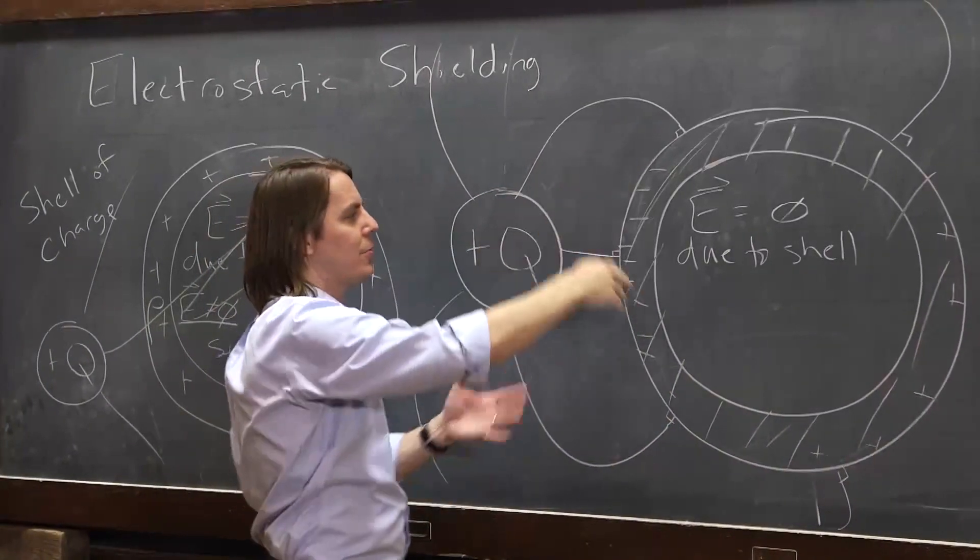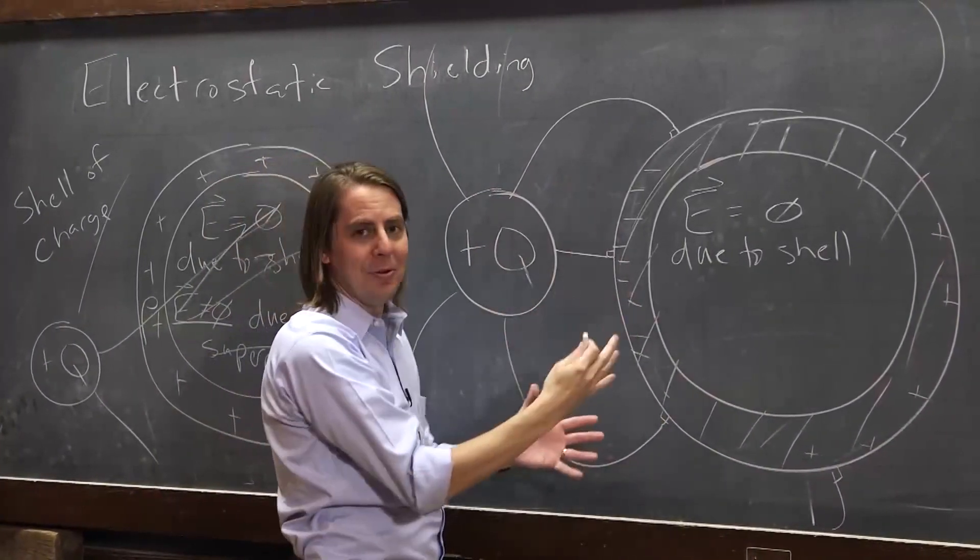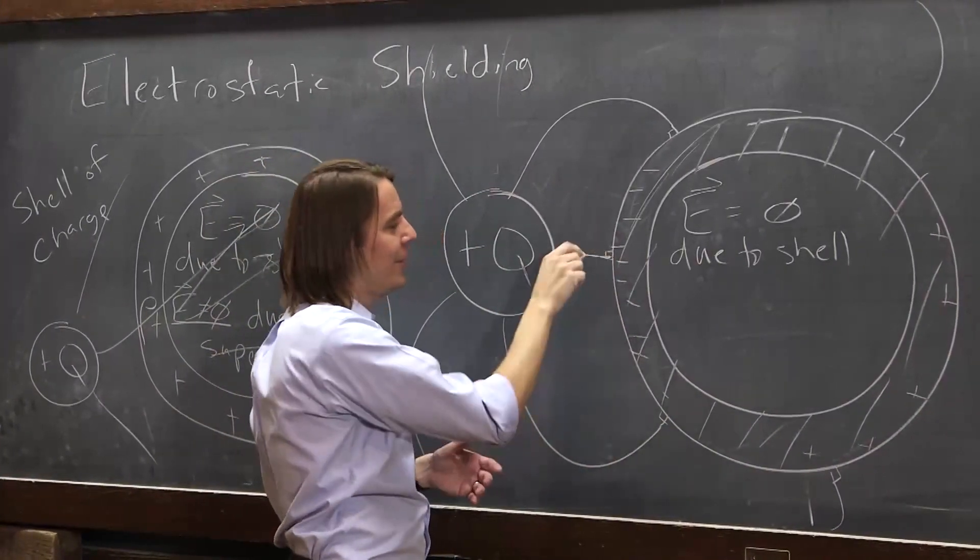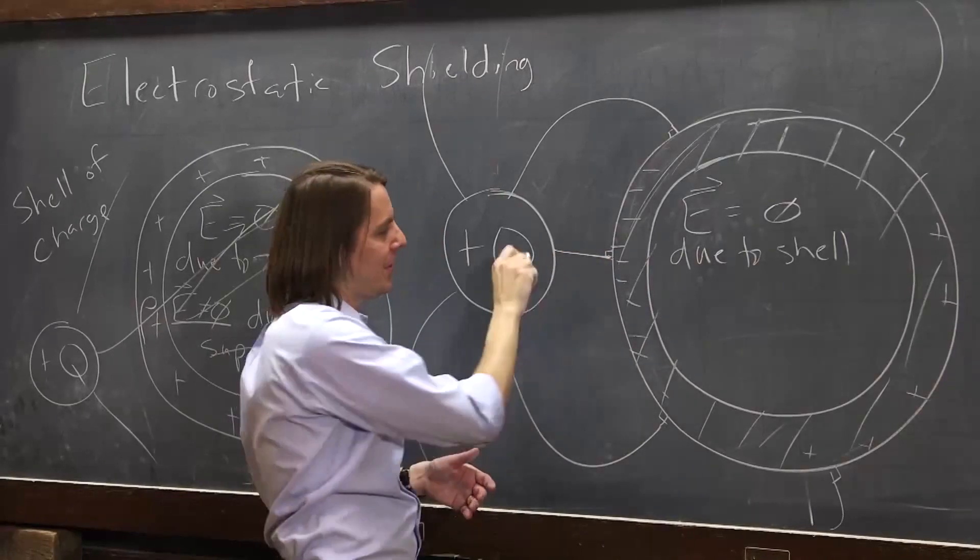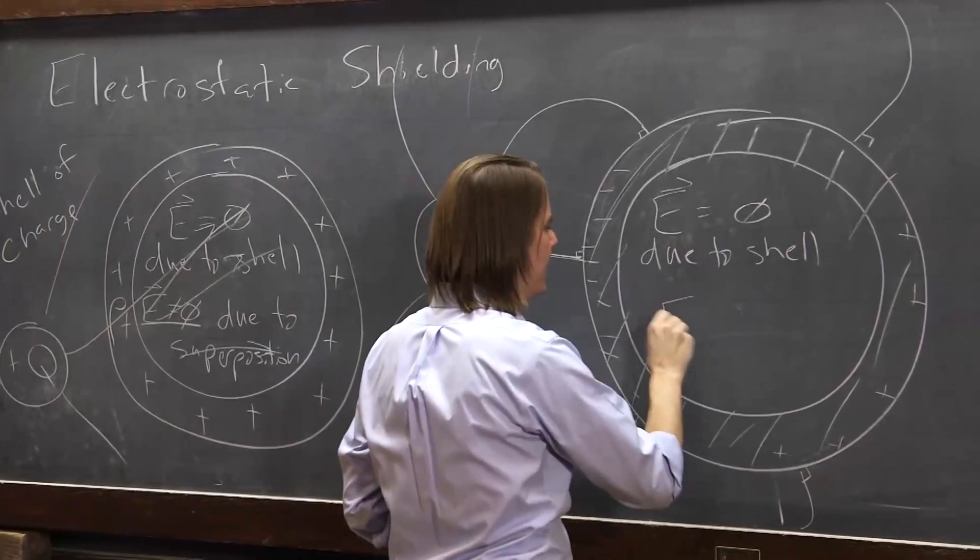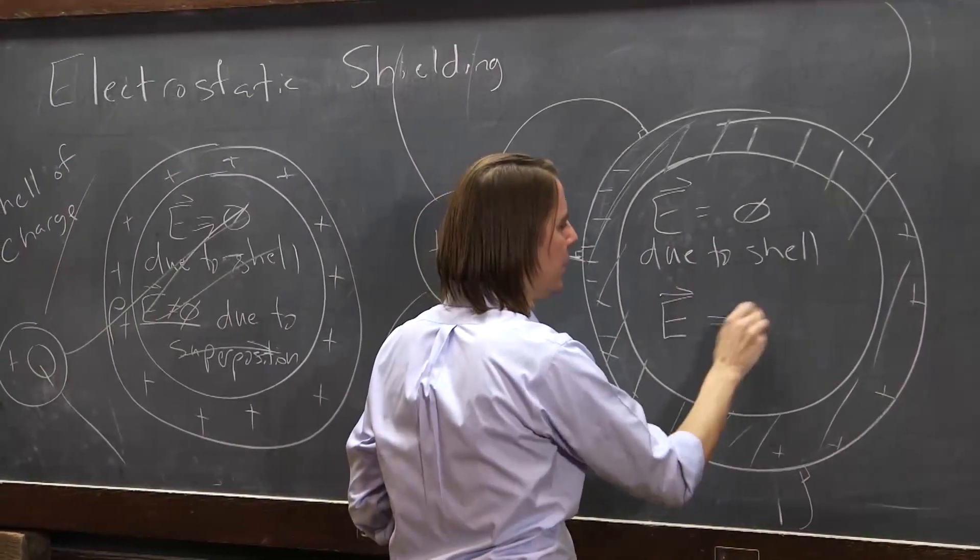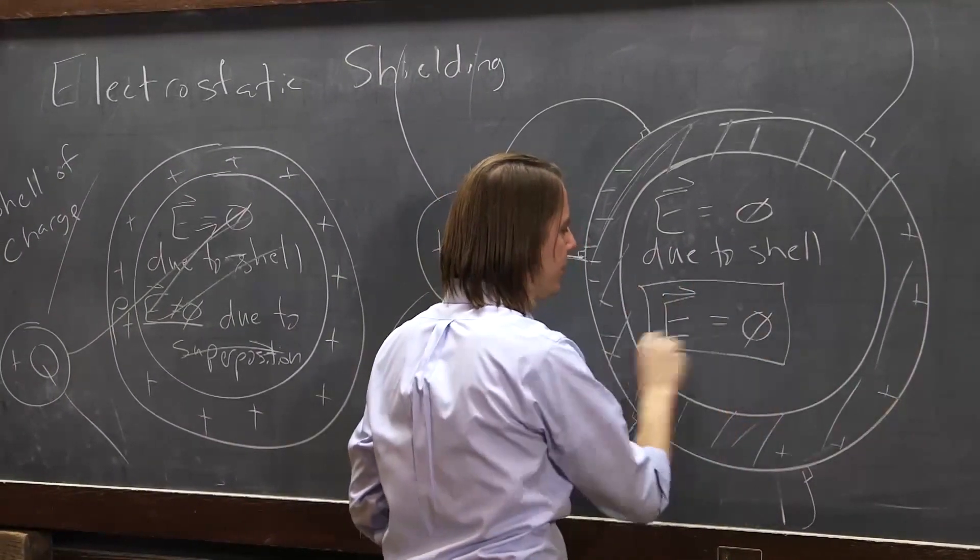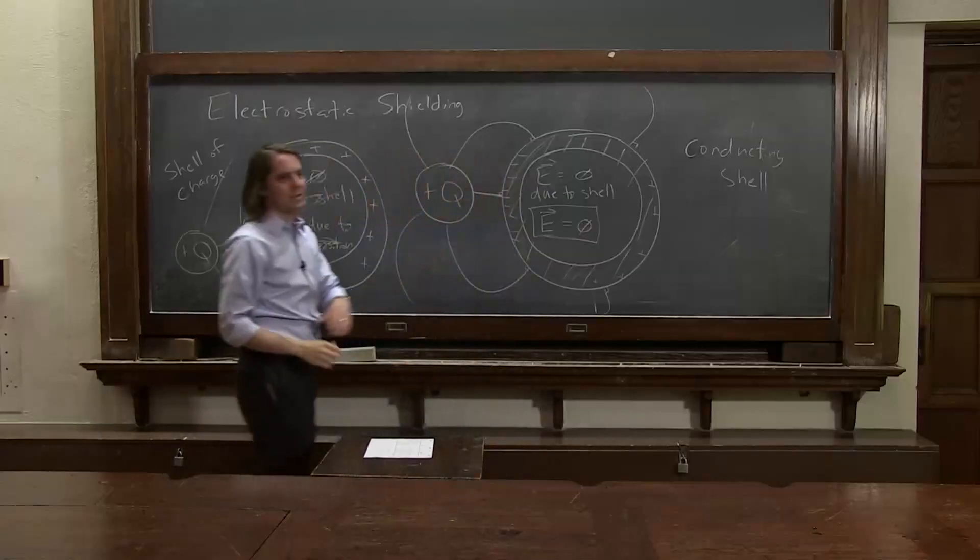And it does that due to the properties we talked about of a conducting object. Basically, these electrons will move until they can't move anymore. They'll move until all these field lines, fields are perpendicular to their surface. And once that field line hits perpendicular, it's finished. Therefore, no field lines get in. So it is actually true that inside a metal shell, E really is zero. If it's empty.